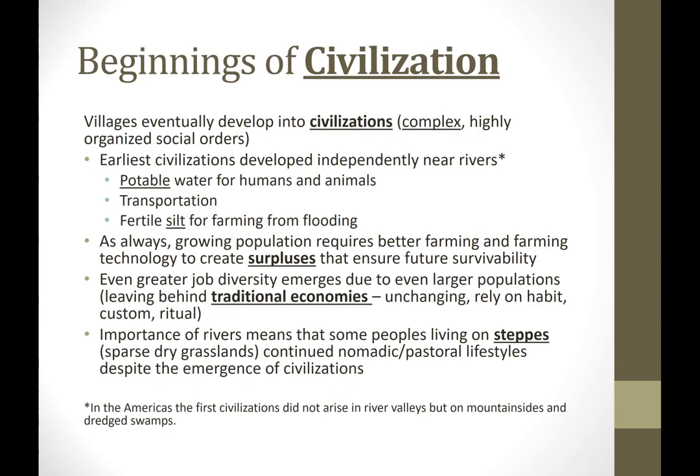We start off with these villages that appeared in the Neolithic period. As humans began to settle down into a fixed location where they didn't have to move from place to place anymore, they could start building up culture in ways they hadn't been able to previously as nomadic hunter-gatherers. These villages become the sites where civilizations start to develop. Our textbook defines civilizations as complex, highly organized social orders, although we'll get into the much more important elements of civilization later in this PowerPoint.